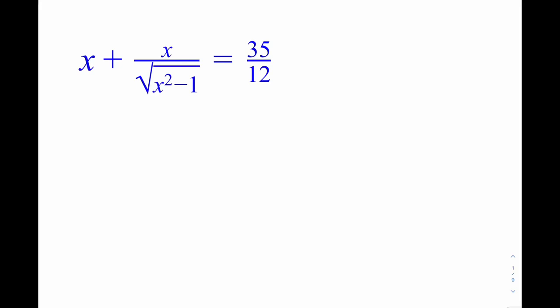Hello everyone. In this video we're going to be solving an equation — you want to call it rational, radical, both, whatever you want to call it. This is our equation: x plus x divided by the square root of x squared minus 1, equal to 35 over 12. And we're going to be solving for real x.